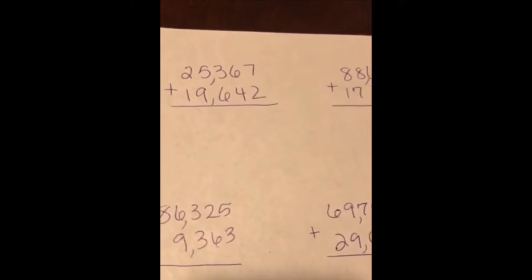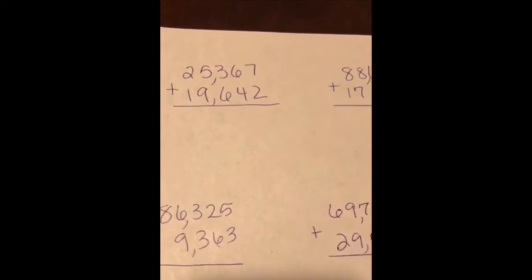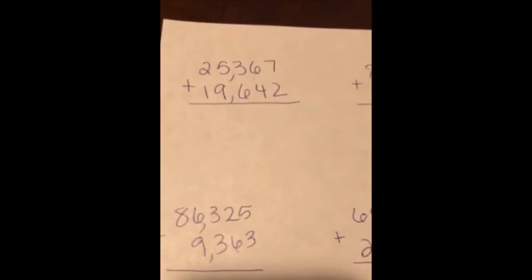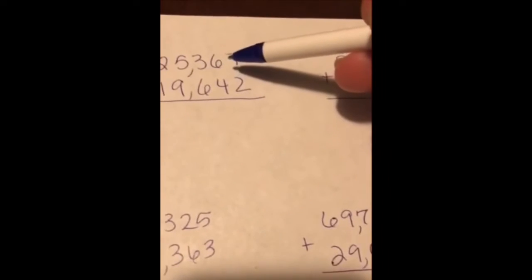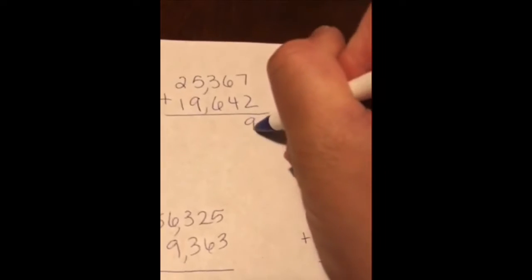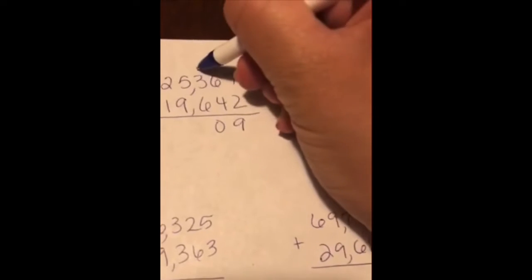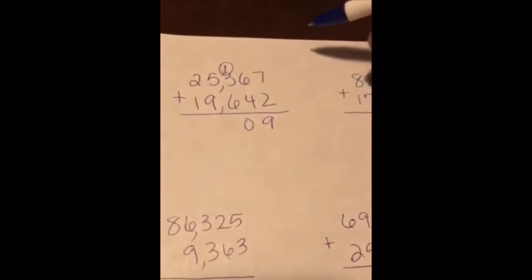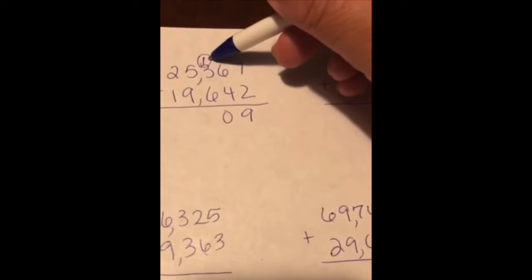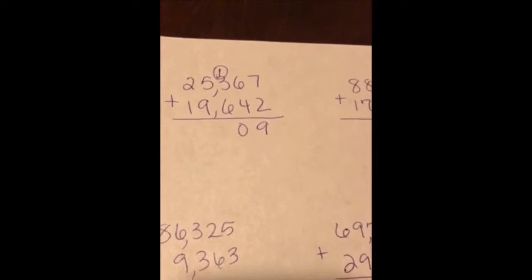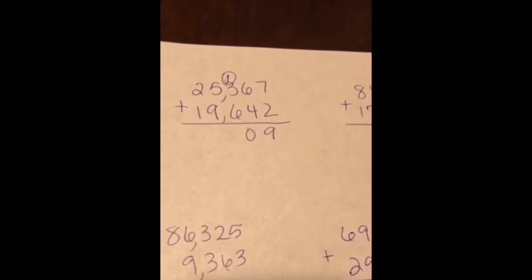I'm going to add the ones column first. Seven plus two is nine. Six plus four is ten. I drop my zero and regroup my one into the hundreds place. I always circle my one and then slash it when I use it just to make sure that I'm doing the math correctly.